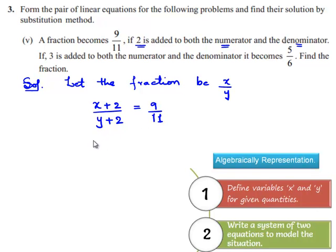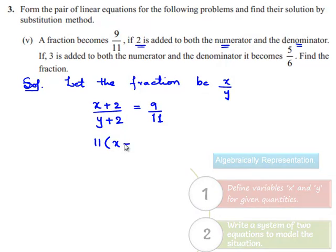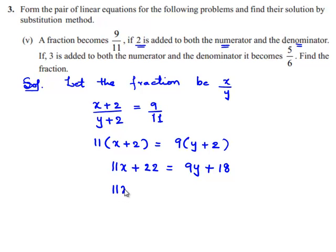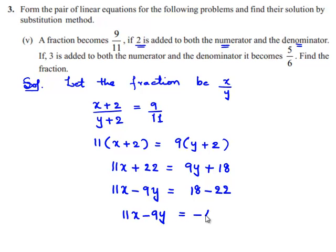On cross multiplication, we get 11 times of (x plus 2) is equal to 9 times of (y plus 2). This gives 11x plus 22 equal to 9y plus 18. Rearranging the terms we get 11x minus 9y is equal to 18 minus 22, which is minus 4. So let this be equation number 1.